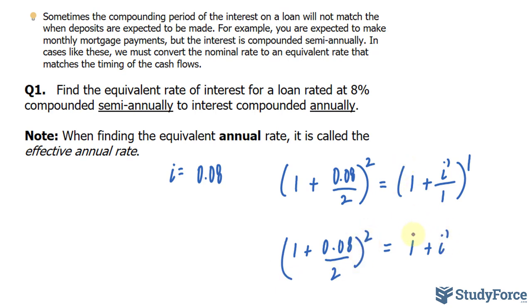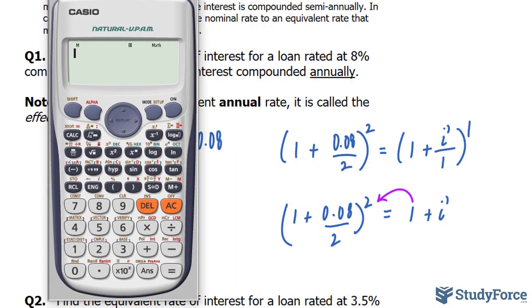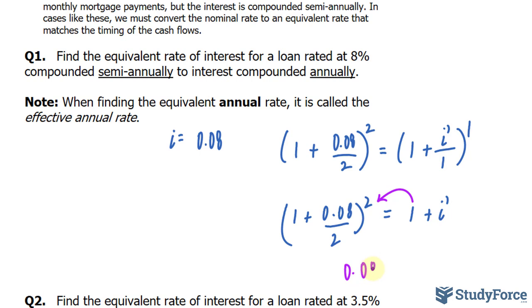And now I'll solve for I prime. So I'll bring that 1 over. And I'll use my calculator to do the rest. Turning on my calculator, open parentheses, 1 plus 0.08 divided by 2. And that's being raised to the power of 2. And remember that we brought that 1 over. So it becomes minus 1. And we end up with an interest rate of 0.0816.